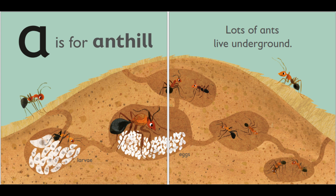A is for ant hill. Lots of ants live underground. This is larvae. These are eggs.